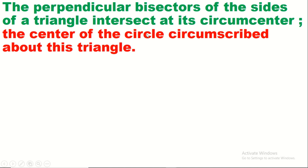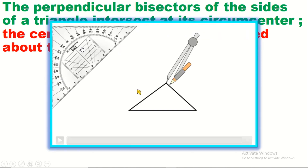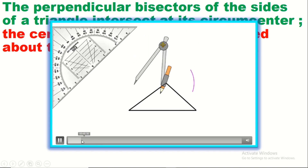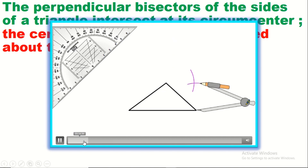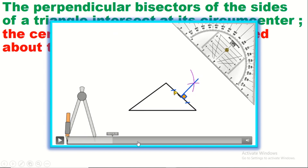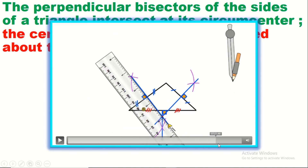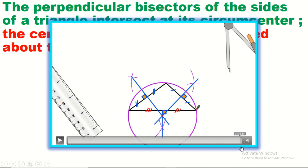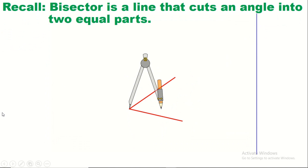The perpendicular bisectors of the sides of a triangle intersect at its circumcenter. For more detail, there is a linked video on constructing circles circumscribed about triangles. Briefly, we draw the perpendicular bisector for each of the three sides; these three perpendicular bisectors intersect at a point called the circumcenter, which is the center of the circle exactly circumscribed about the triangle.